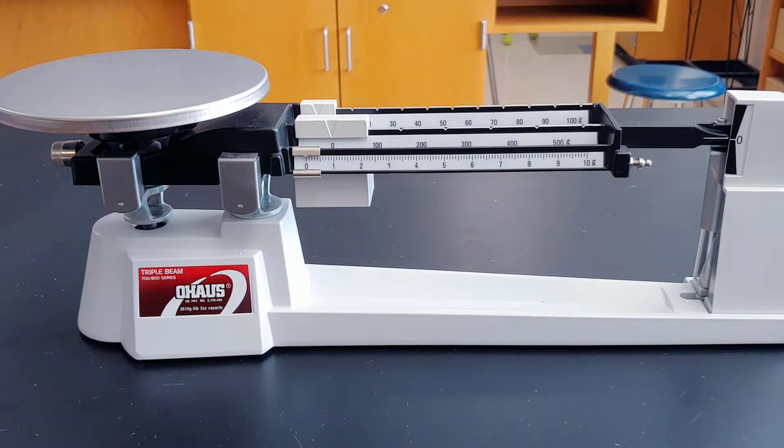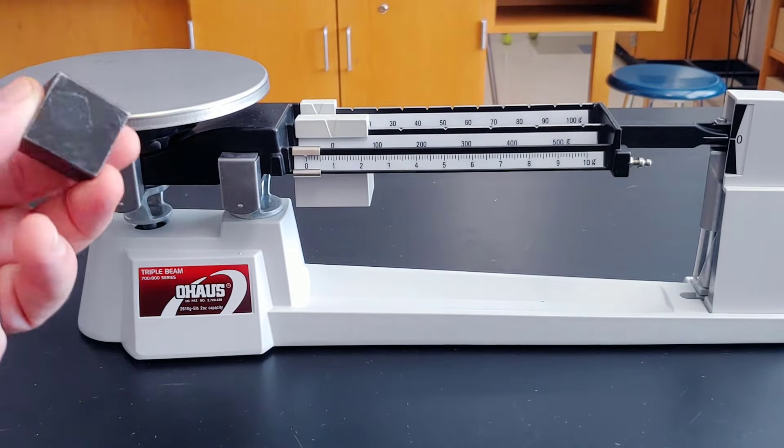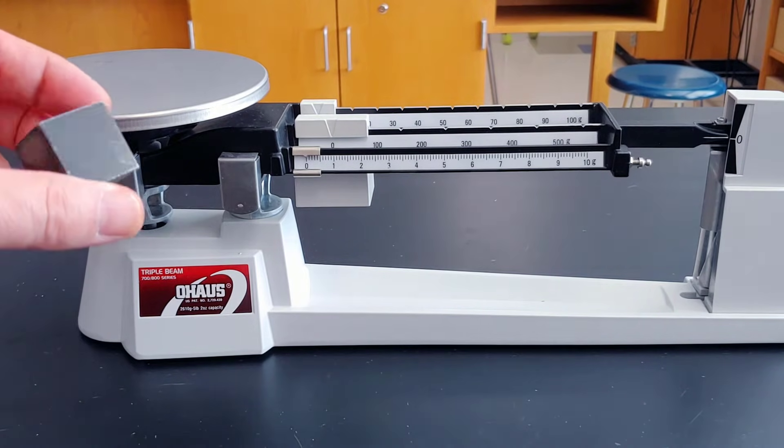The triple beam balance is one of the most common instruments you'll be using in science class, and you use it to find mass in grams. Today, we're going to find the mass of this iron cube.